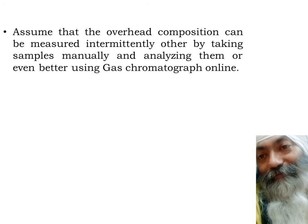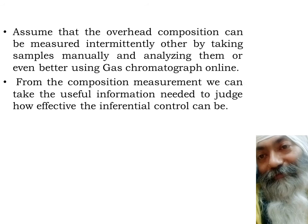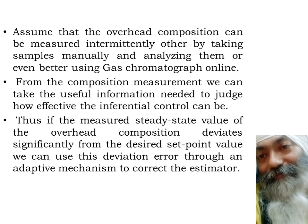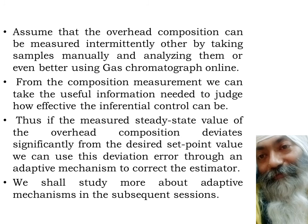When process conditions change, the model changes and the estimator is no longer accurate, so the estimator adapts itself to changes in the process. If the overhead composition is measured using a gas chromatograph, we check the effectiveness of the inferential control, and in case of any deviation we use an adaptive mechanism to correct the estimator itself. This adaptive mechanism and the inferential control estimator — including how it works and how to model it — will be studied in the next part of this video session on inferential control.